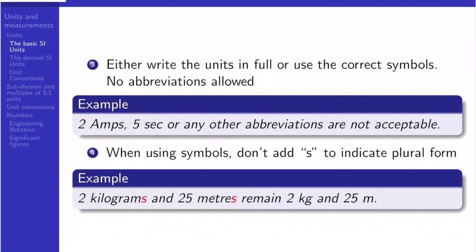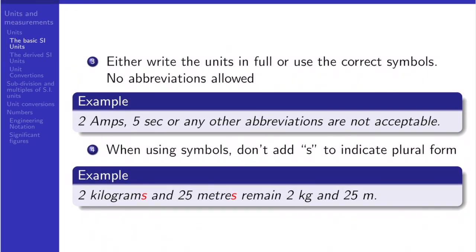Thirdly, you either have to write the unit in full or use the correct symbol. You don't use any abbreviation. You cannot say 2 amps. You have to say 2 amperes or 2A when we write units.